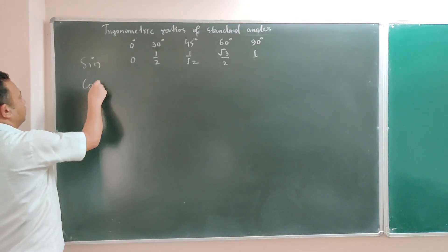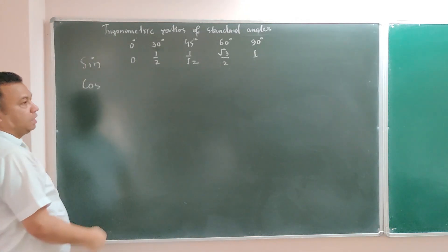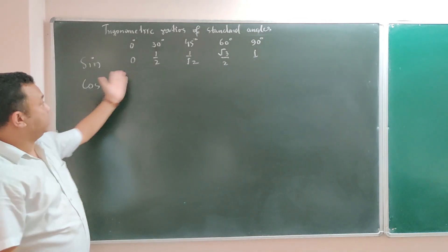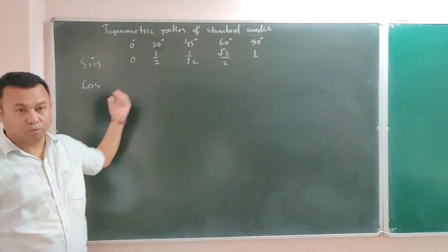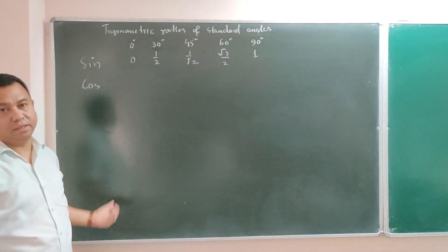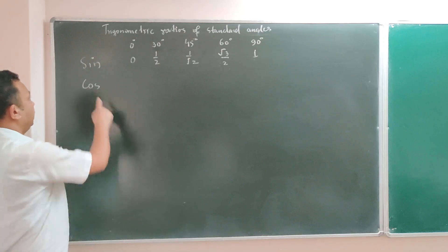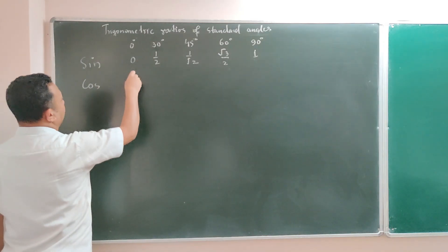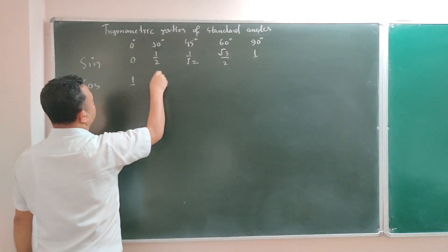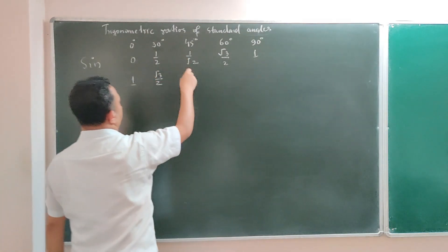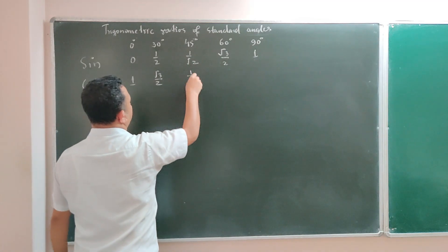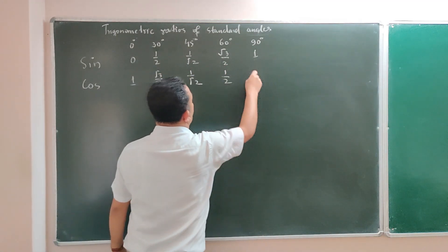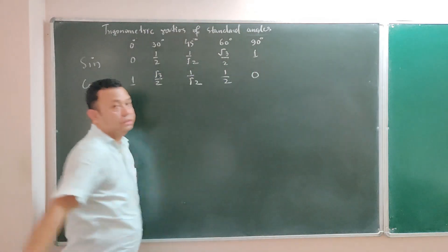Similarly for cos — that is why I said 30 values: one trigonometric ratio has 5 values, so 6 into 5 is 30 values. Cos 0° is 1, cos 30° is √3/2, cos 45° is 1/√2, cos 60° is 1/2, and cos 90° is 0.